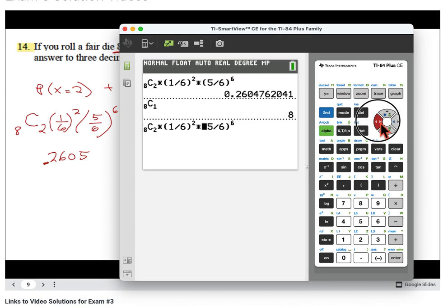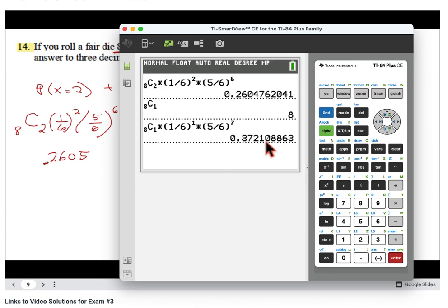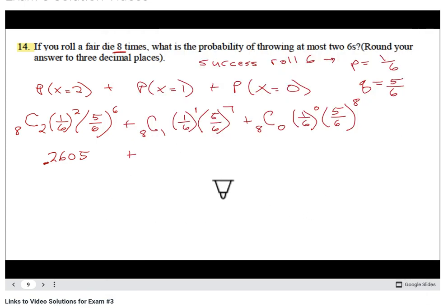I can then just say choose one here. This exponent is going to change to a one, and this exponent is going to change to a seven. A lot easier than retyping this whole thing. That's what I'm getting for four decimal places: 0.3721.